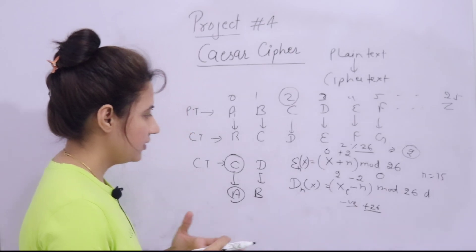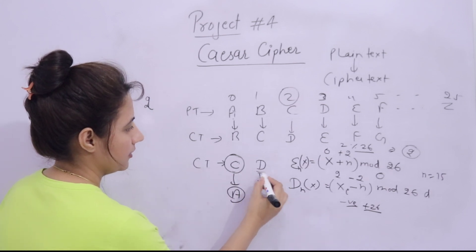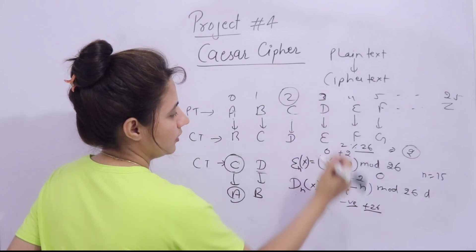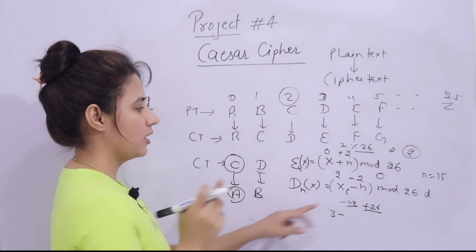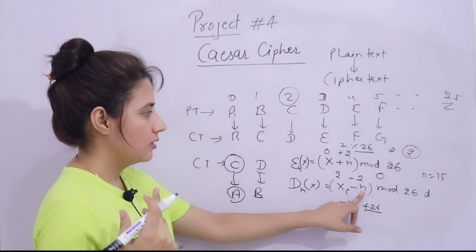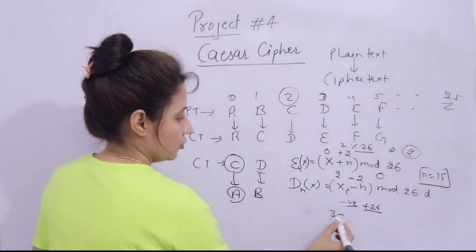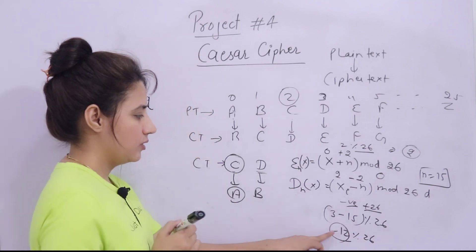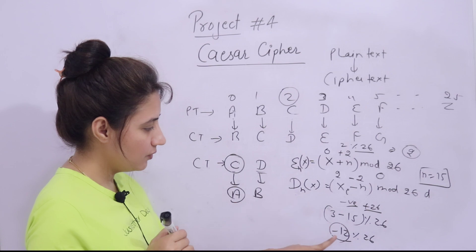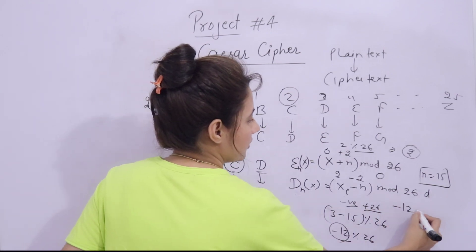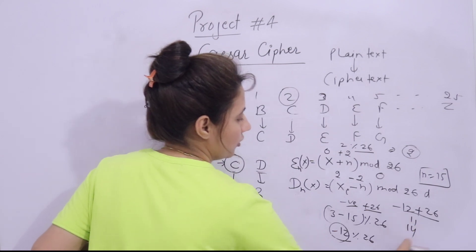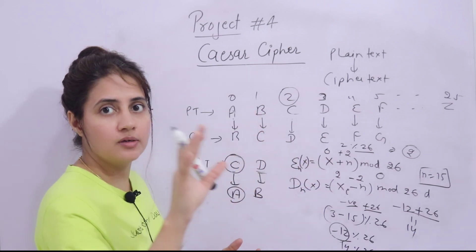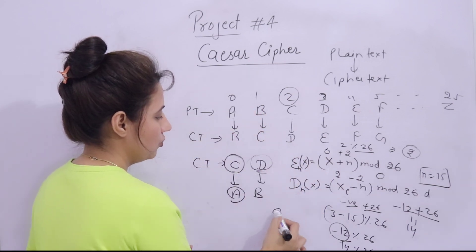For example, if in the cipher text we have the letter 'D', its position is 3. Suppose the shift key is 15, so 3 minus 15 mod 26 = negative 12 mod 26. Since this value is negative, we add 26: negative 12 plus 26 = 14. Then 14 mod 26 = 14, and at index 14 we have 'O'. So 'D' would be converted to 'O'.